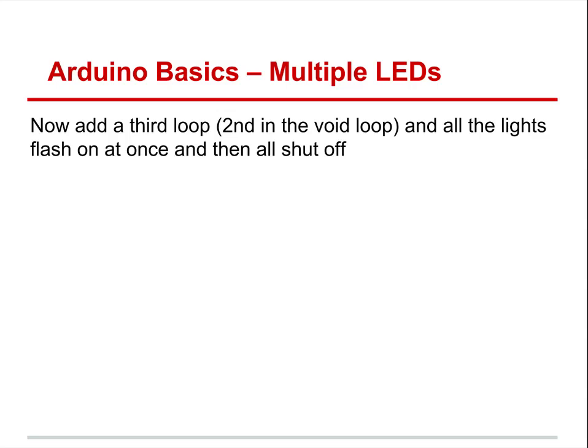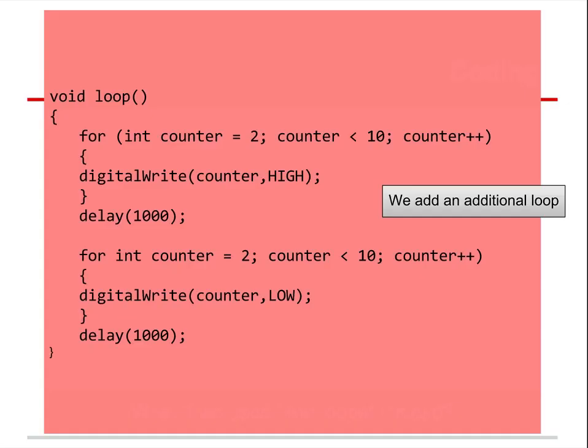We can also make all the lights flash on at once. In void loop, a for loop from two to less than 10 sets digital write counter high — turning all LEDs on. Then a separate for loop writes them all low. Before adding this second loop, save your first file with a new name — that way if you make a mistake, you can still get back your old program. Notice the for loop has its containers with no semicolon after the parentheses — if it has containers, it usually doesn't have a semicolon after it.